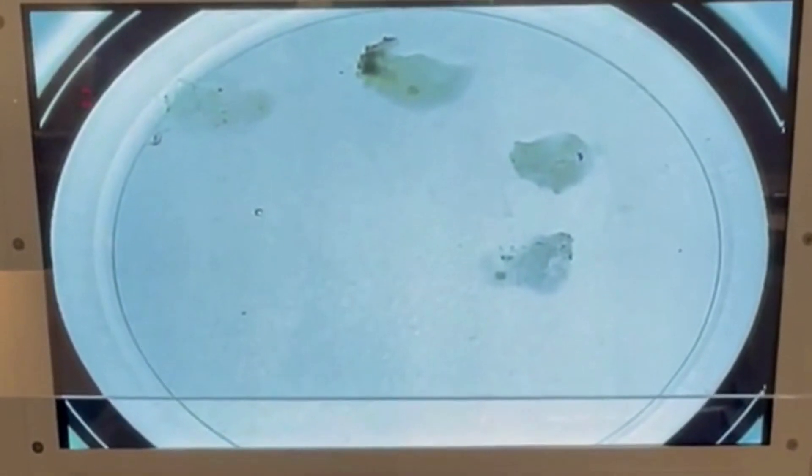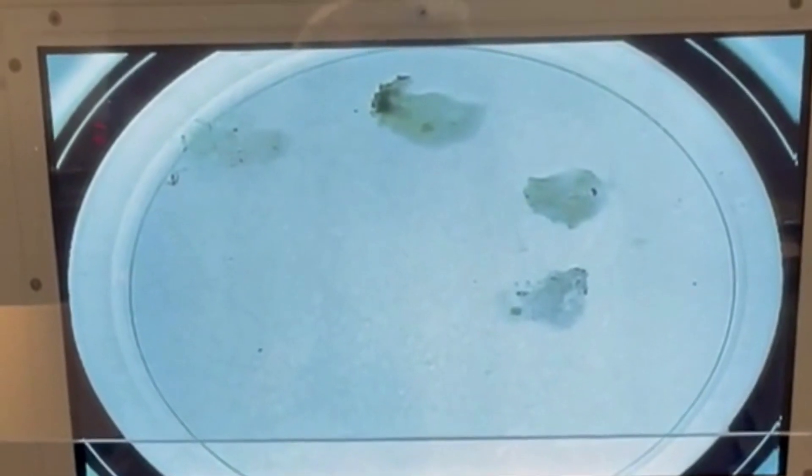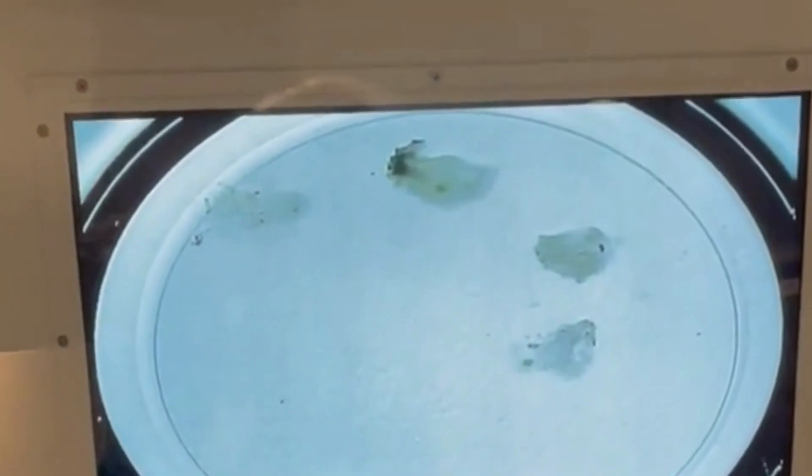It is surrounded by its cumulus mass and these cumulus cells are later removed so that we can assess the egg's maturity and prepare it for injection with sperm.